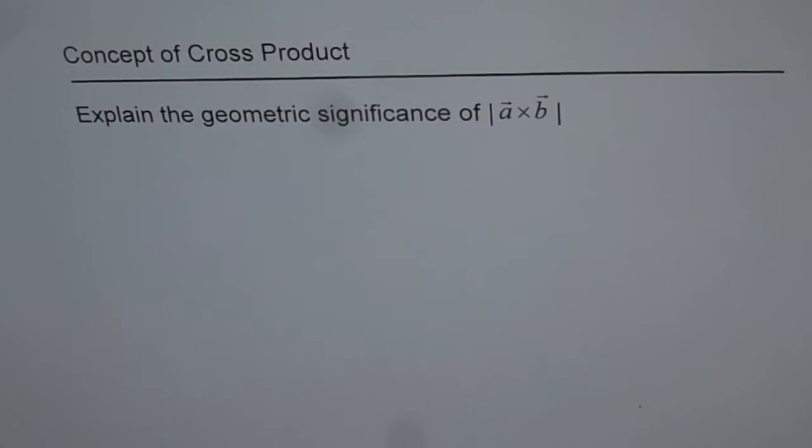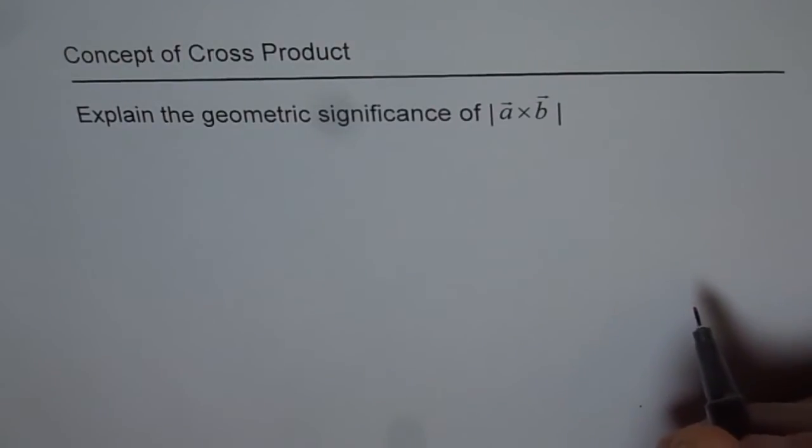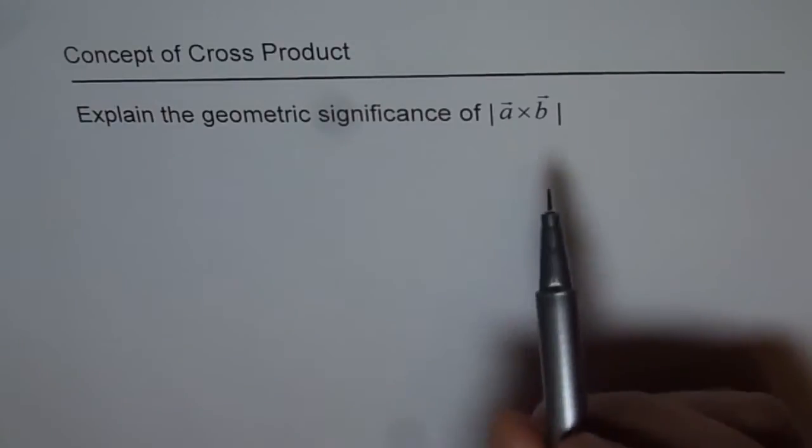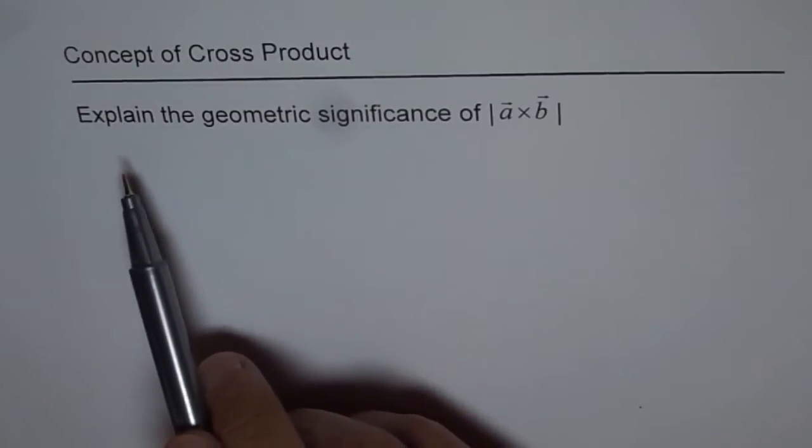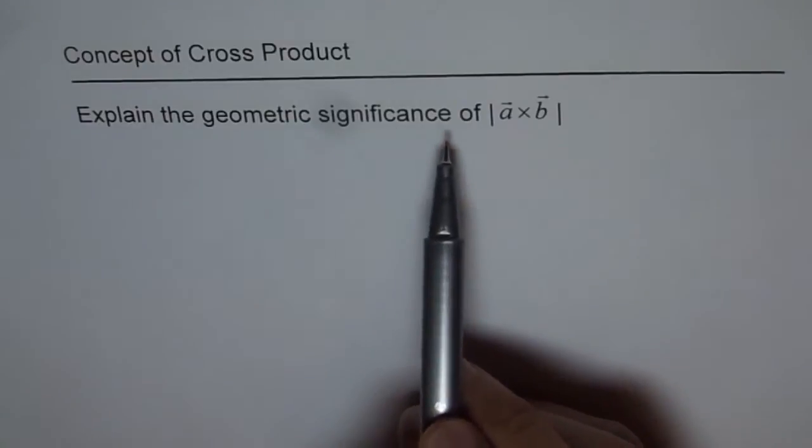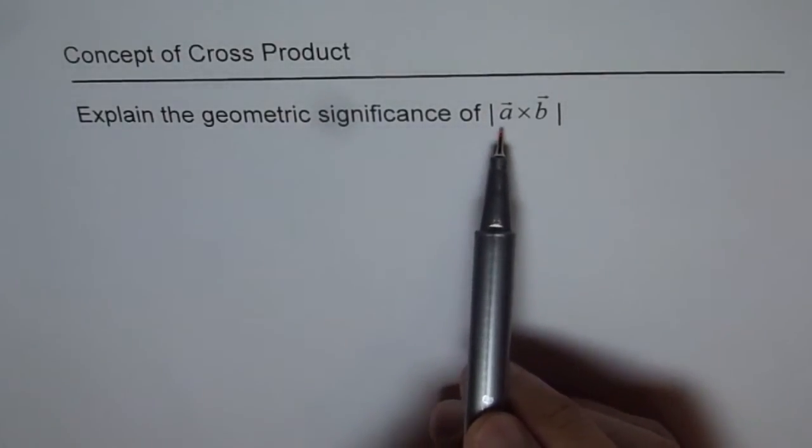Concept of cross product. Explain the geometric significance of magnitude of A cross B. This is very important to understand and we will use this application a lot to find area of parallelogram and area of triangles and that way area of any polygon. The question here is, explain the geometric significance of magnitude of A cross B.